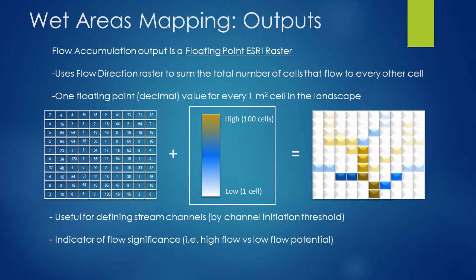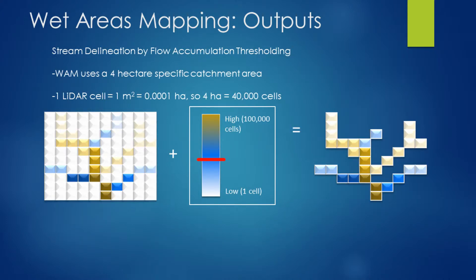There are some other potential uses for this dataset as well. It can be very useful for defining stream channels through channel initiation thresholding methods. Areas of higher flow accumulation would have higher significance in terms of headwater potential flow and nutrient fluxing through those areas that are going to have higher flow accumulation values.